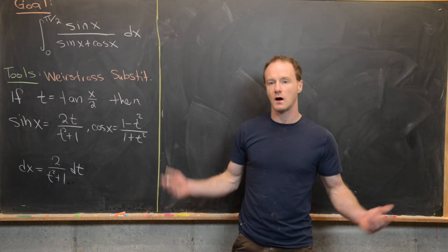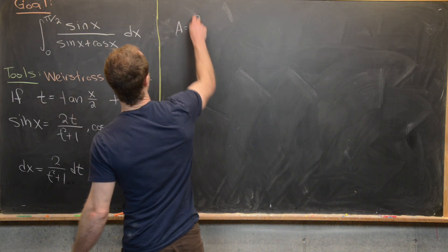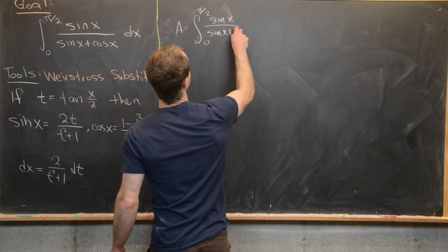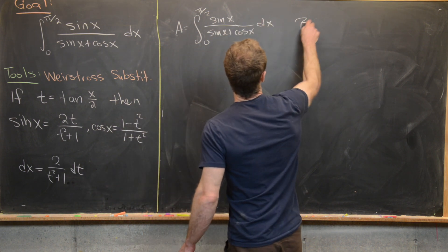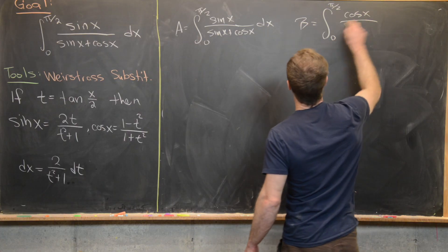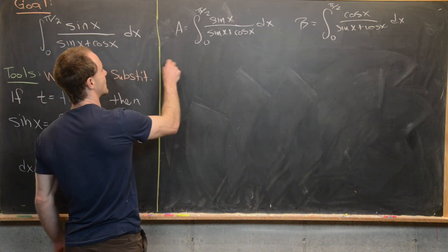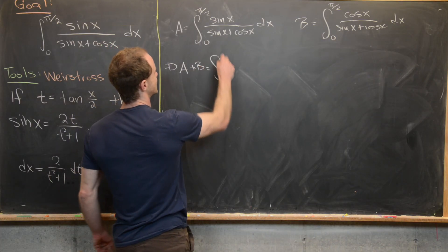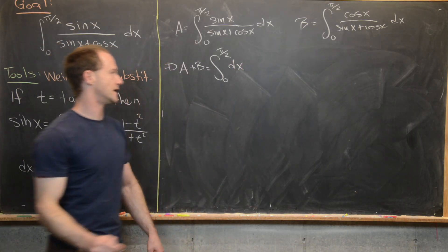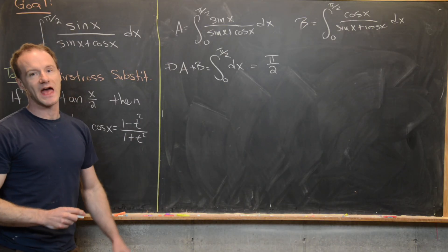Now we evaluate the same integral much more quickly using symmetry. Set A equal to the integral from 0 to pi over 2 of sine x over (sine x plus cosine x) dx, and B equal to the integral from 0 to pi over 2 of cosine x over (sine x plus cosine x) dx. Then A plus B equals the integral of (sine plus cosine) over (sine plus cosine), which is just 1, so A plus B equals pi over 2.